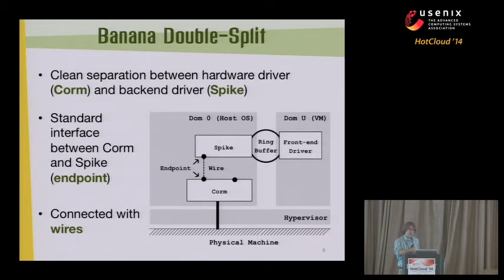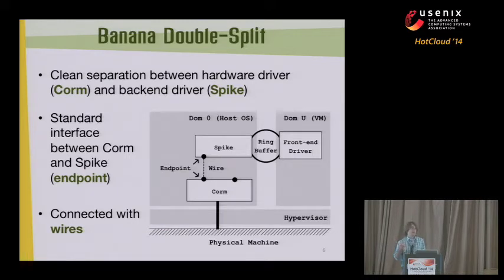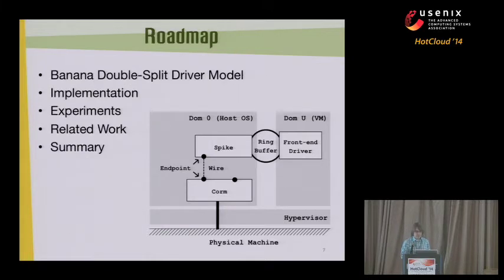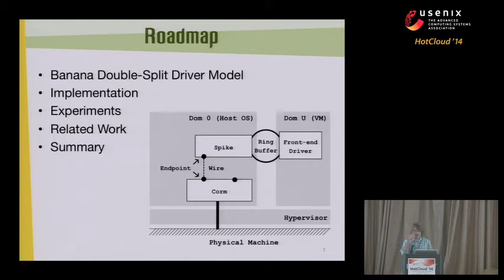If you think about moving that guest and domain zero to another machine, the spike may go with it and that wire will stretch out across multiple physical machines. So that initial limitation on flexibility sort of goes away. The rest of the talk I'll give more detail about the banana double split driver model, describe some of our implementation and experiments to date, and then finish up with related work.